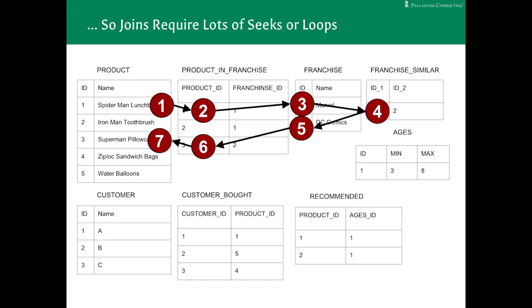The example we saw where from the Spider-Man lunchbox, we walked up to Marvel and then over to DC, and then back to the Superman pillowcase, there's at least seven joins in a typical database, even if they're indexed.